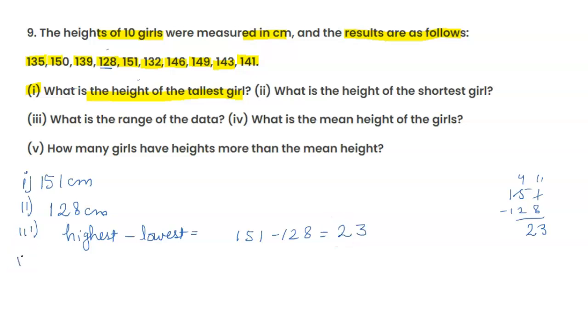Next is fourth part, what is the mean height of the girl? Mean height निकालनी है, तो mean is equals to sum divided by total girl. Sum लिखेंगे यहाँ पर, तो यहाँ पर हम अगर देखें.